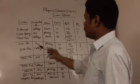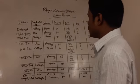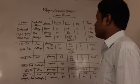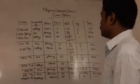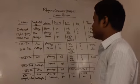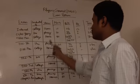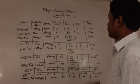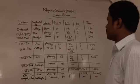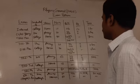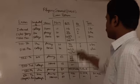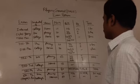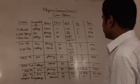Then we have the core course practical exams, which are conducted by the college, so they happen at the home college. It's a total of thirty marks, and it involves three kinds of sections.